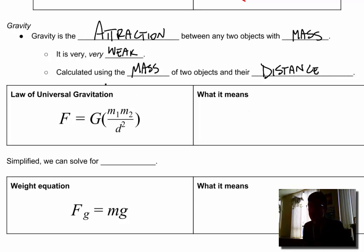And this is calculated using the mass of two objects and their distances from one another. This is the law of universal gravitation where F is the force of gravity. G, this is called the gravitational constant. And you're not going to need to know that for my class in particular. And so we've got the mass multiplied divided by the distance squared.